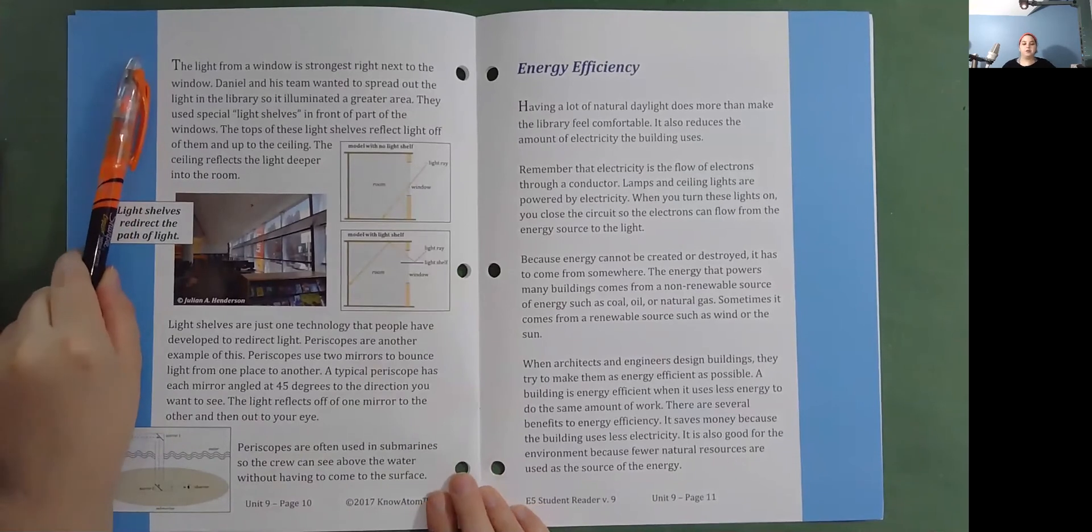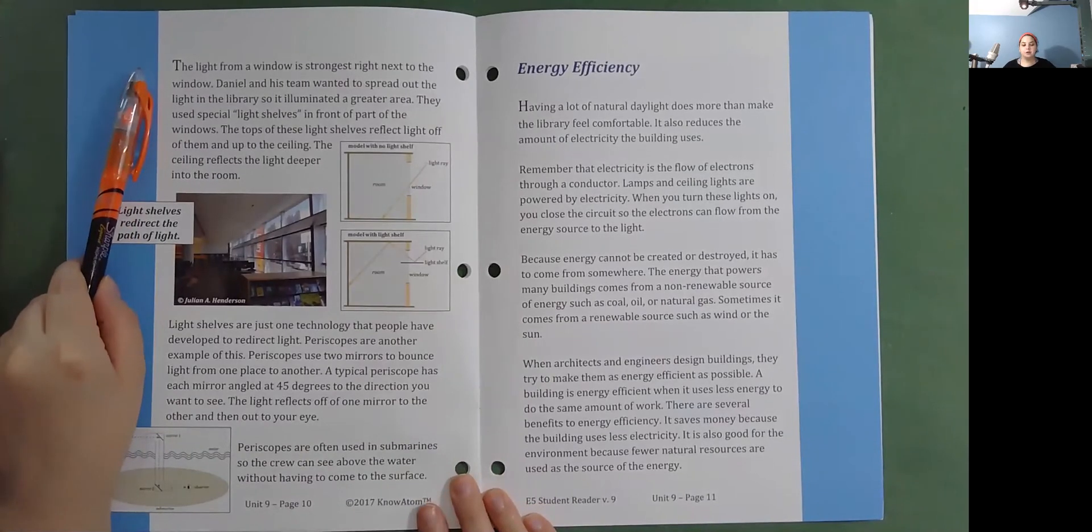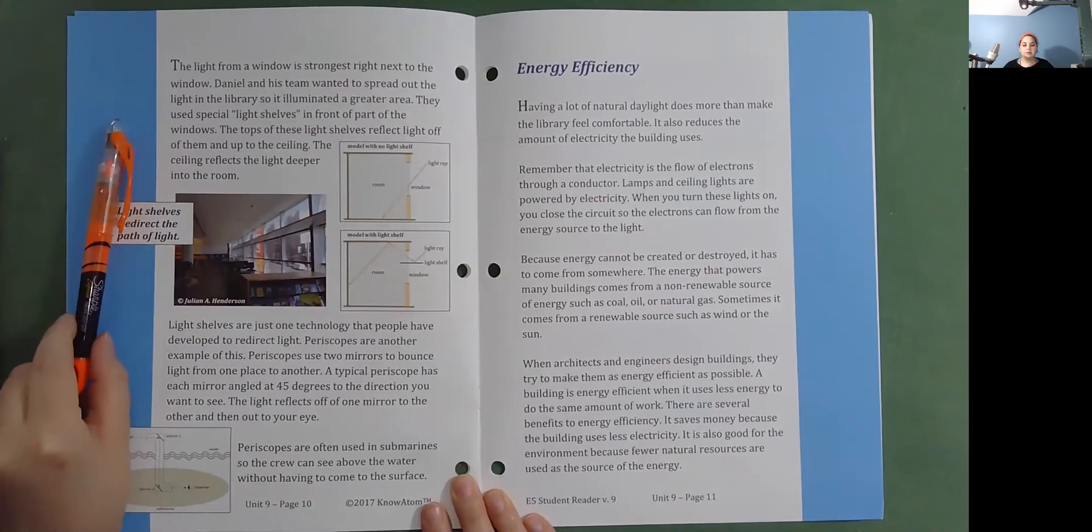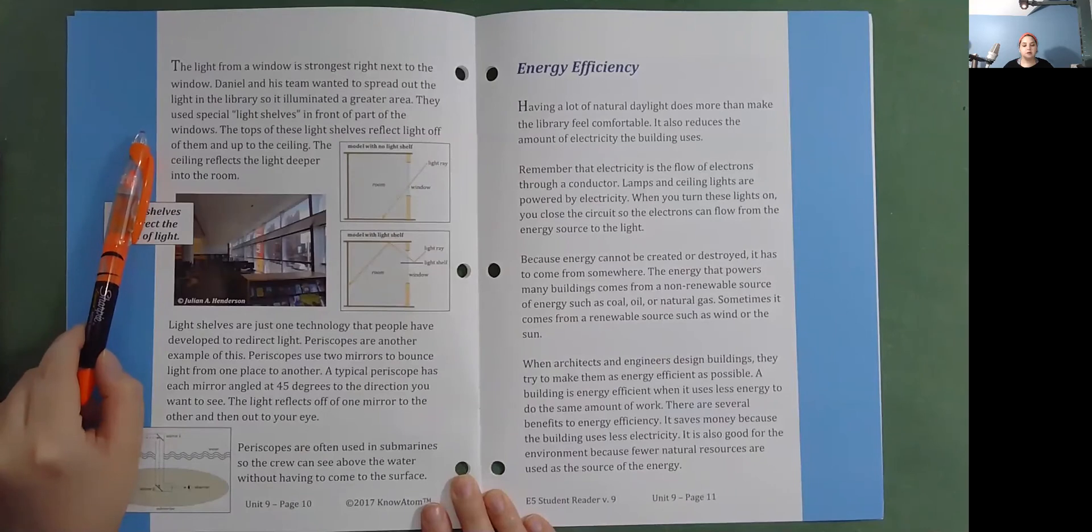The light from a window is strongest right next to the window. Daniel and his team wanted to spread out the light in the library so it illuminated a greater area. They used special light shelves in front of parts of the windows. The tops of these light shelves reflected light off of them and up to the ceiling.